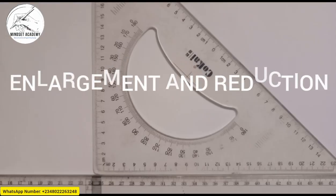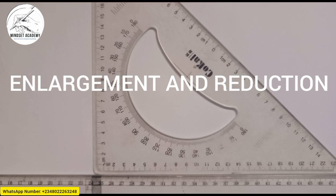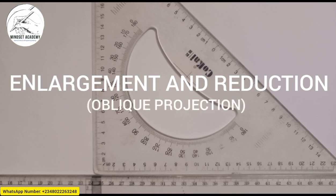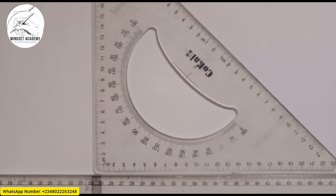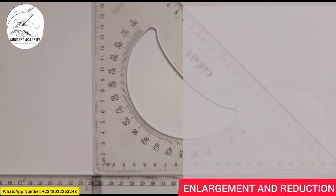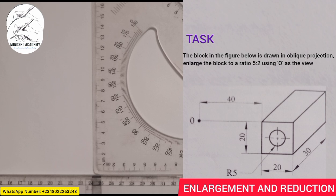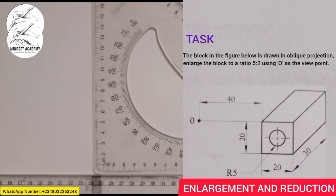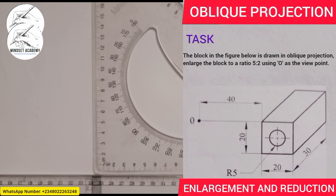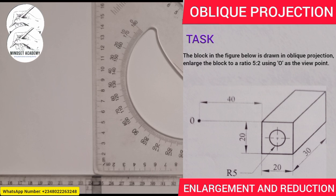Welcome to my channel Mindset Academy, where we want to solve the problem displayed on the right-hand side of the screen. The question attached to this problem is: the block in the figure below is drawn in oblique projection. Enlarge the block to a ratio of 5 to 2 using O as the viewpoint. So the first thing we have to do is draw back the figure as shown on the right-hand side of the screen. Let's start.